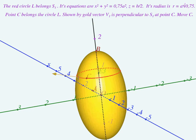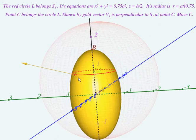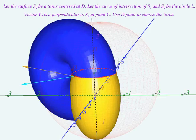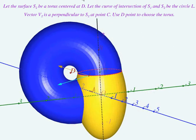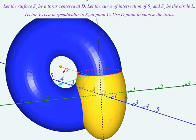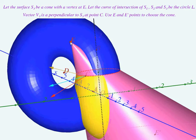For example, surface S1 is an ellipsoid. Surface S2 is a torus centered at point D. Surface S3 is a cone with a vertex at point E.